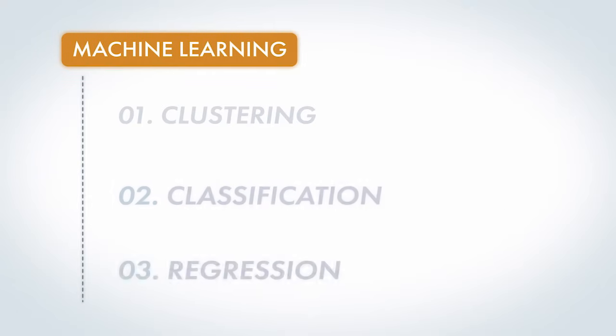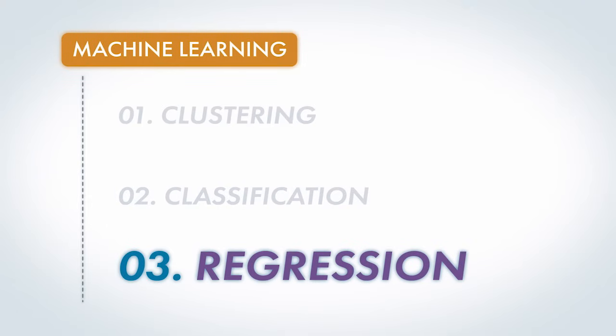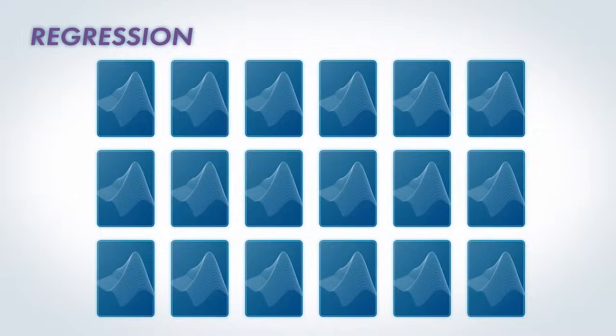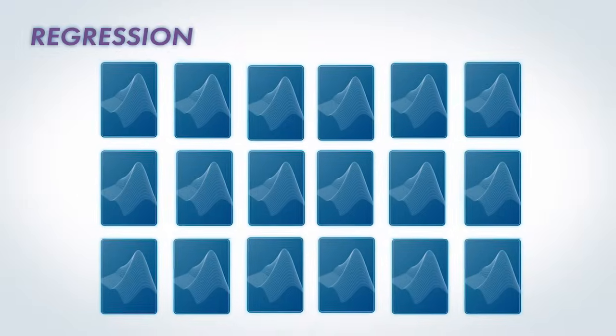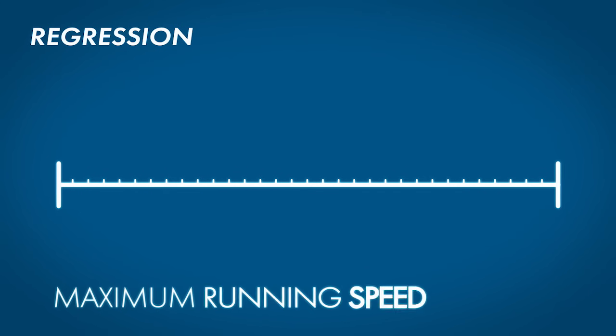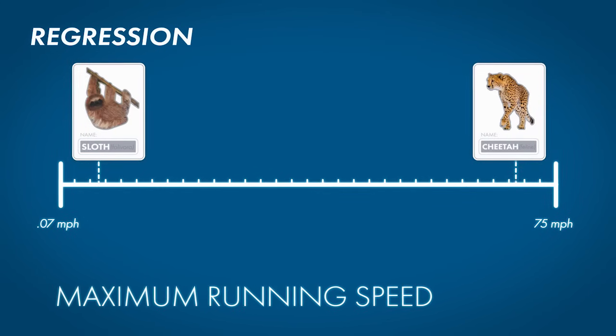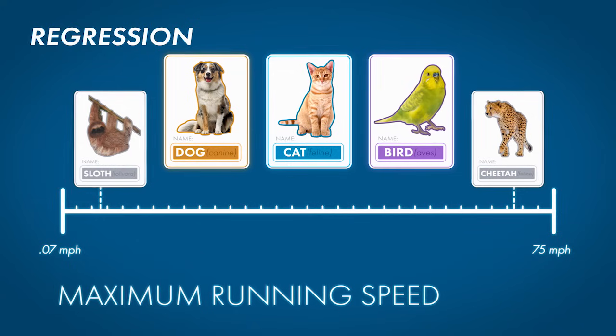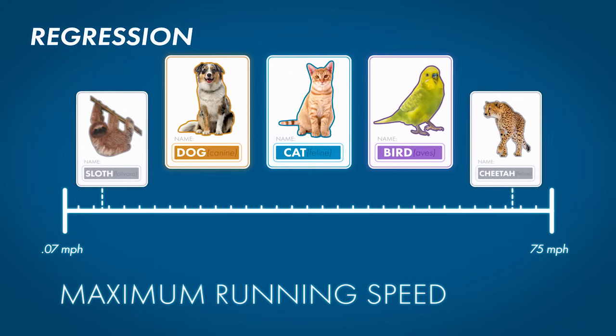The third type of machine learning is regression, where instead of classifying into a finite number of outputs, we're trying to find an answer on a continuum, like the maximum running speed of an animal. To build a model that will predict speed, we do what we did before.